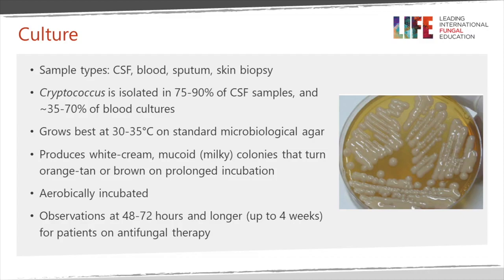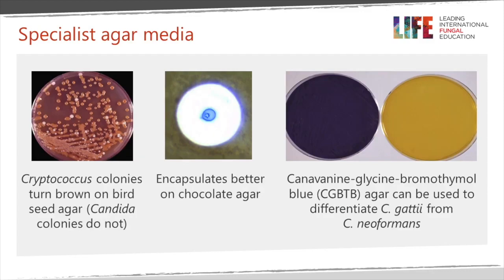The colonies are white, green, mucoid — milky coloured — and over time turn orange, tan or brown as they produce melanin. They grow in aerobic culture, but you have to keep the plates for at least five days and preferably up to four weeks to be sure that cryptococcal cultures are negative, although the vast majority of isolates will grow within five days.